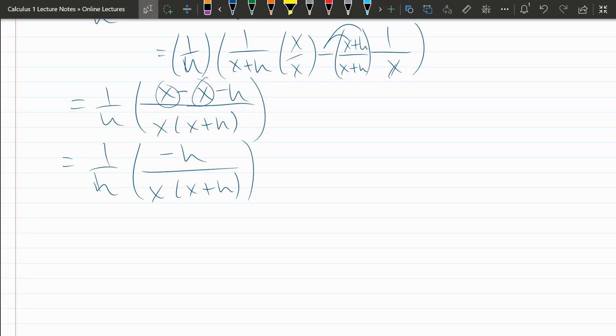From here, that h cancels and we're left with negative one. They don't cancel completely. One of them was negative. So they canceled to a negative one. So now we have simplified away the h in the denominator. That's what we needed to do.